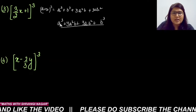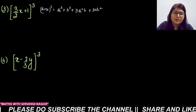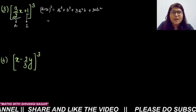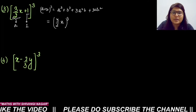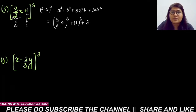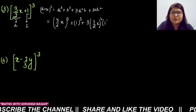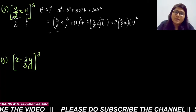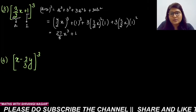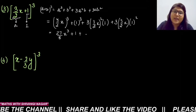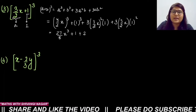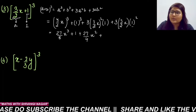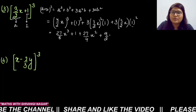For (3/2·x + 1)³: a = 3x/2, b = 1. Expansion: (3x/2)³ + 1³ + 3(3x/2)²(1) + 3(3x/2)(1)² = 27x³/8 + 1 + 3(9x²/4) + 3(3x/2) = 27x³/8 + 1 + 27x²/4 + 9x/2.